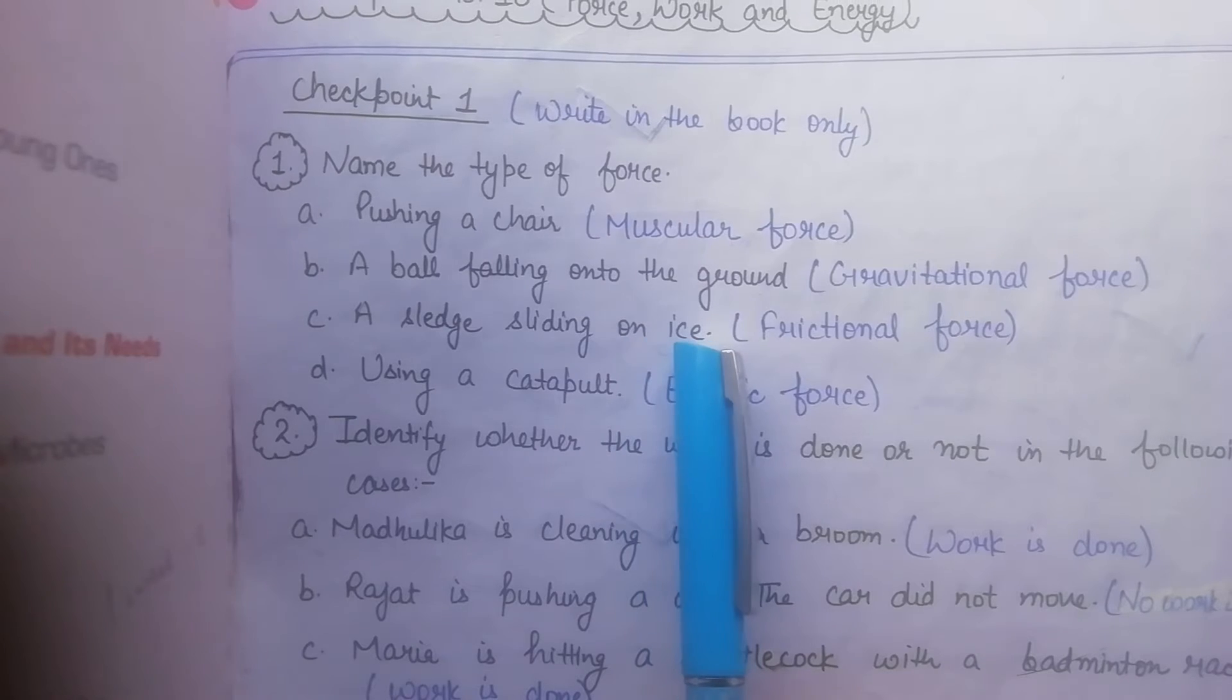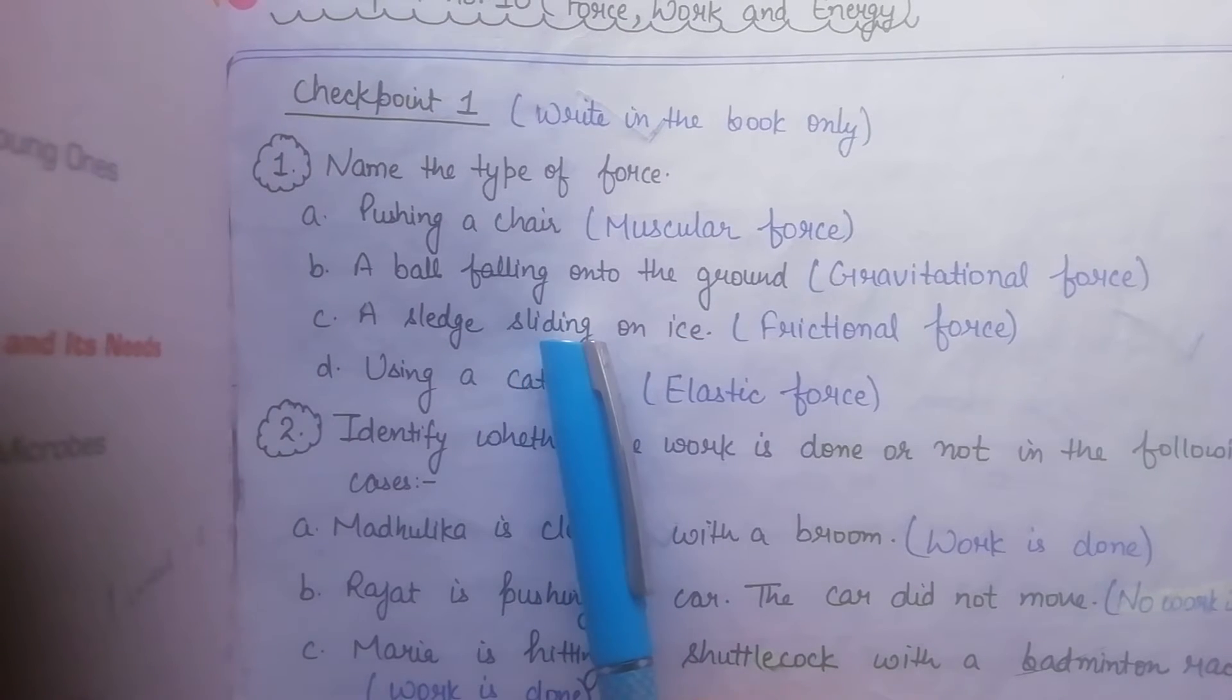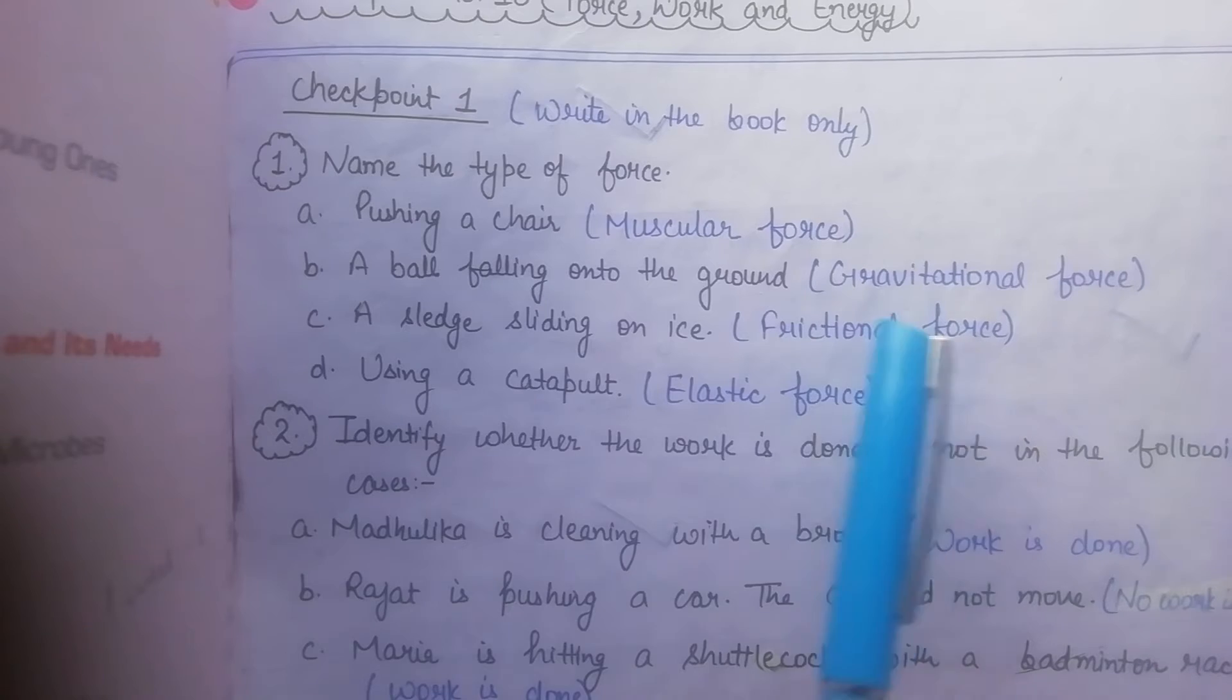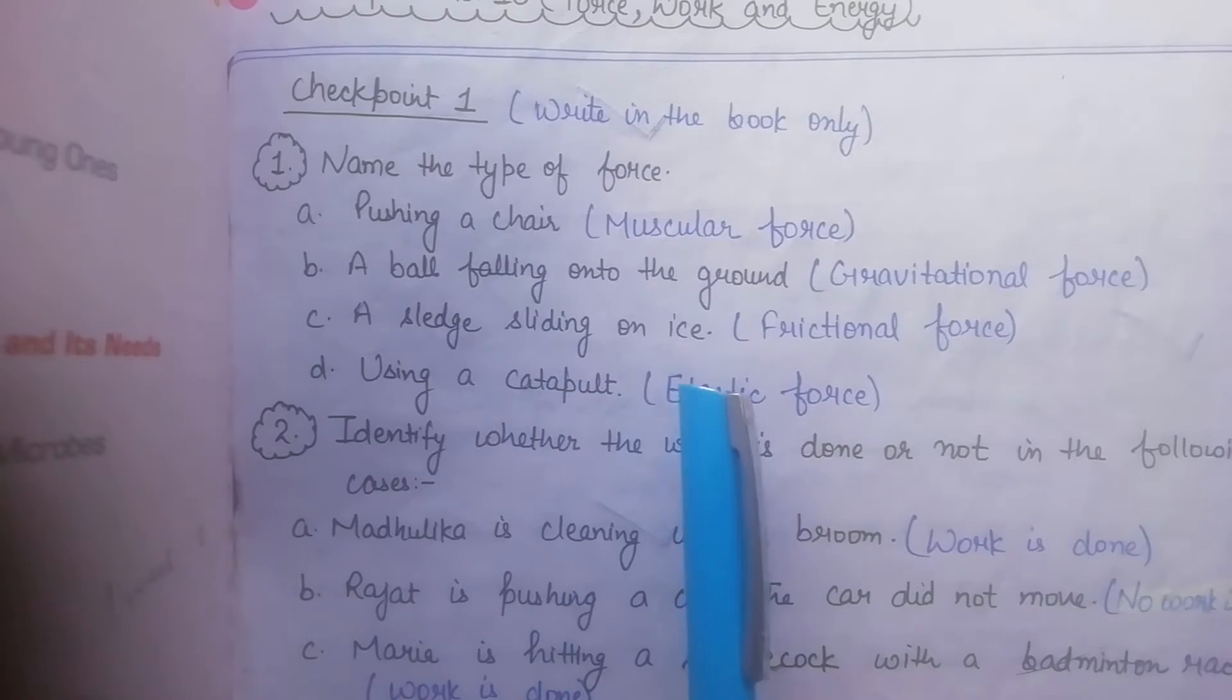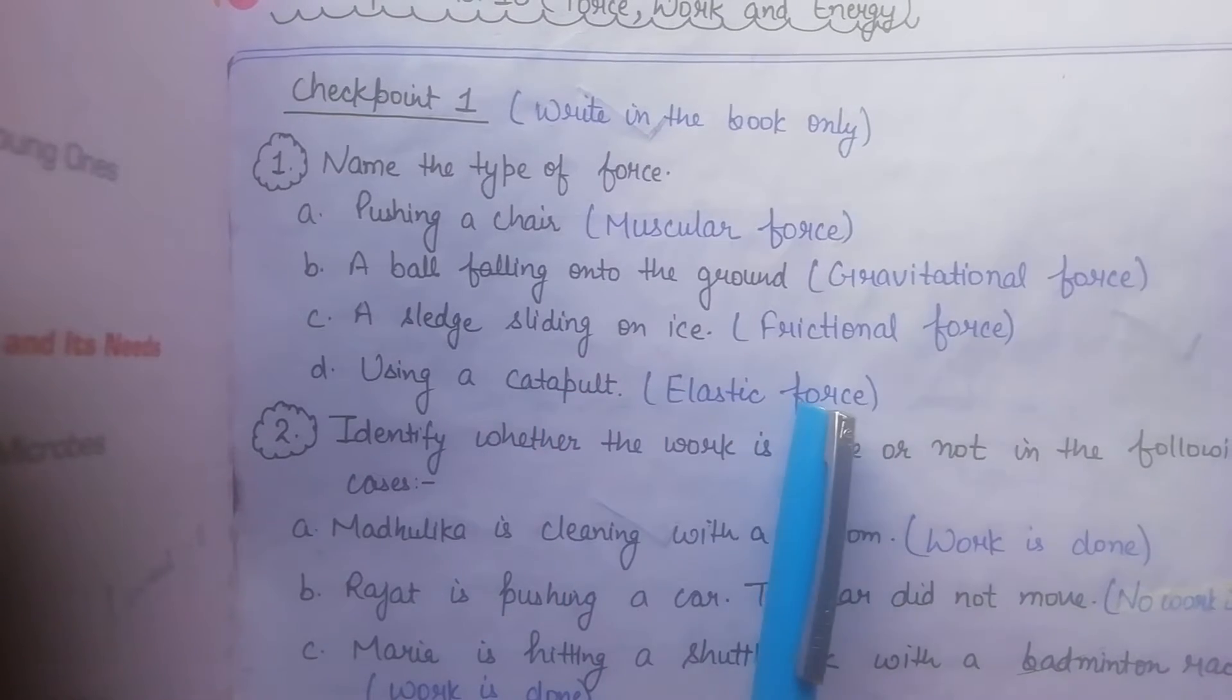A sledge sliding on ice. So when a sliding force is involved, it means that it is frictional force. Using a catapult. Now this is a catapult, it means that it is an arrow. It means that it is elastic. So this means that it is elastic force.